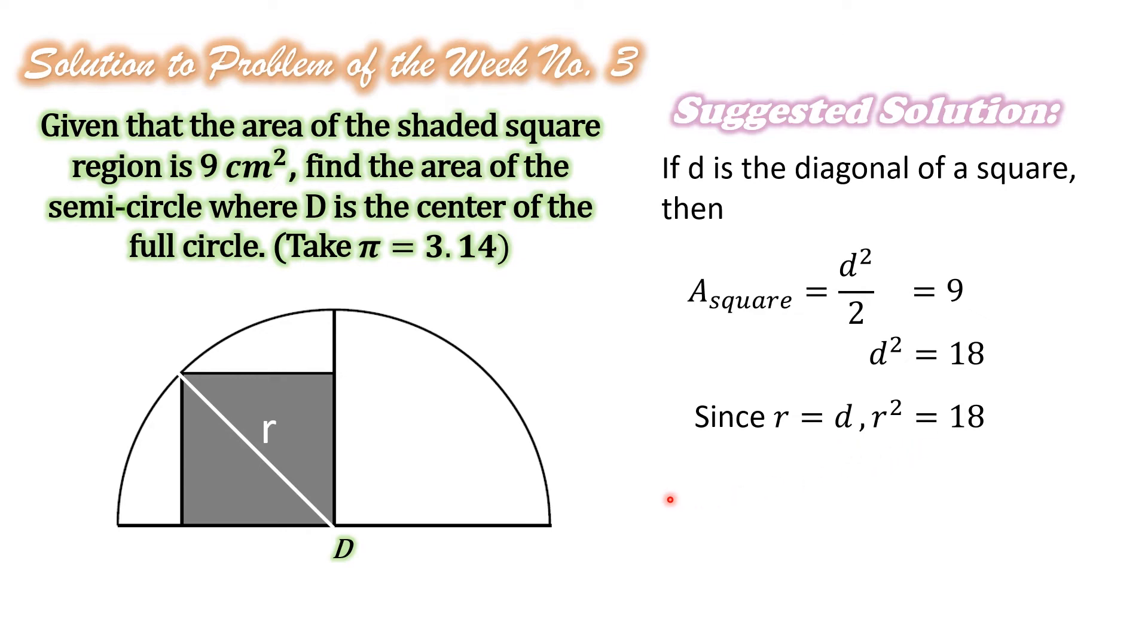And for the area of the semicircle, we have A is equal to pi R squared divided by 2. That is the known formula for the area of the circle divided by 2 since we have a semicircle.